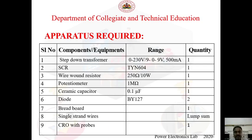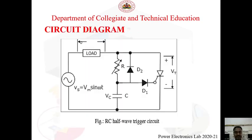To conduct this experiment, the apparatus required are: a step-down transformer from 230V to 9V, a 500mA SCR (TY 604), wire-wound resistors 250 ohms, a 1 megaohm potentiometer (10 watts), a 0.1 microfarad ceramic capacitor, two BY127 diodes, a kit or breadboard, single strand wire, and a CRO with probes.